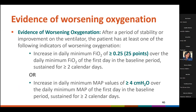After a period of stability or improvement on the ventilator, the patient has at least one of the following indicators of worsening oxygenation: either an increase in the daily minimum FiO2 of at least 25 points over the daily minimum FiO2 of the first day in the baseline period that is sustained for at least two calendar days.